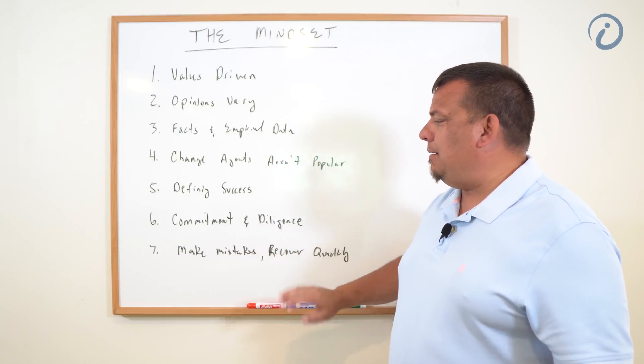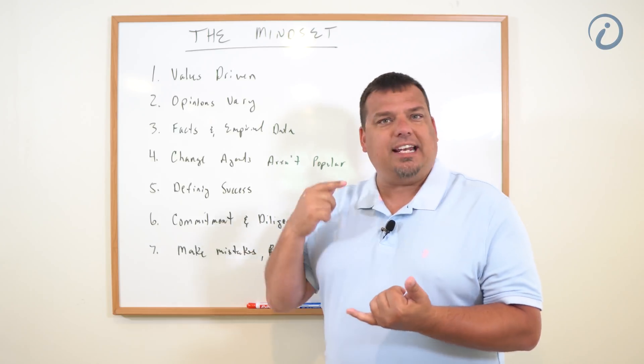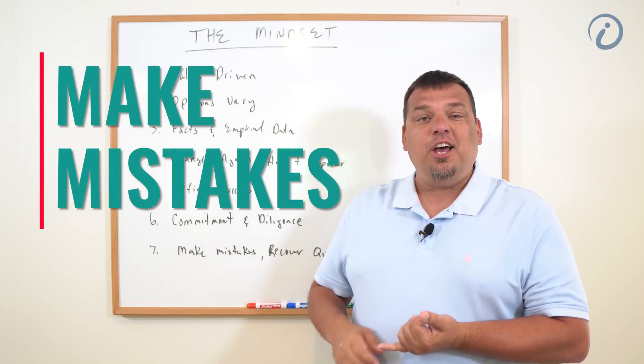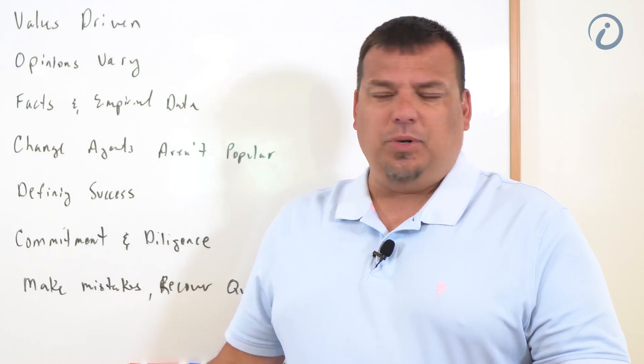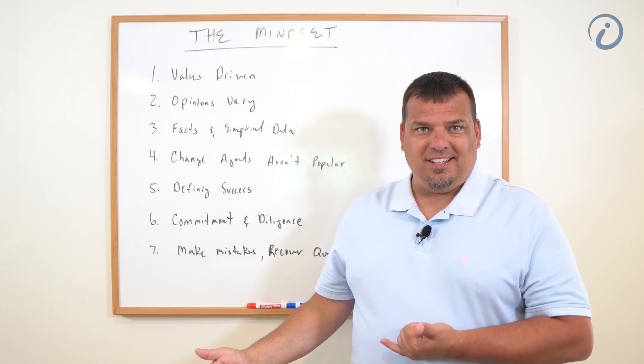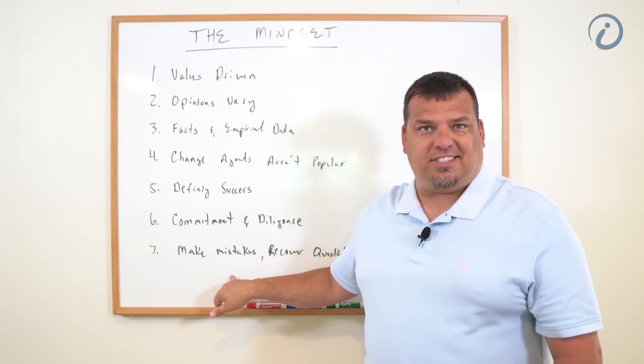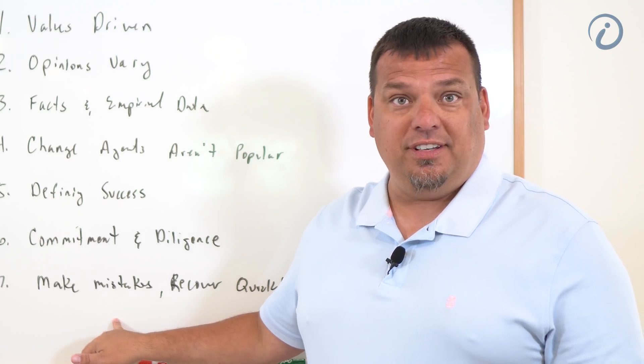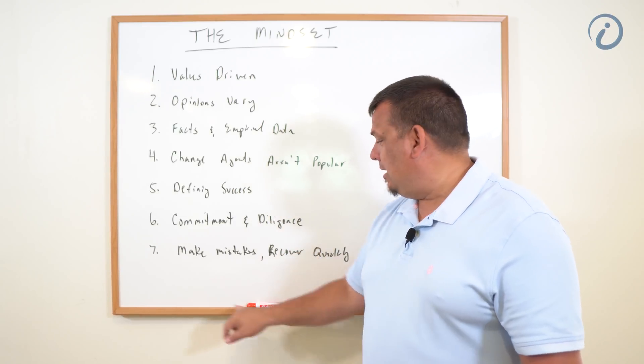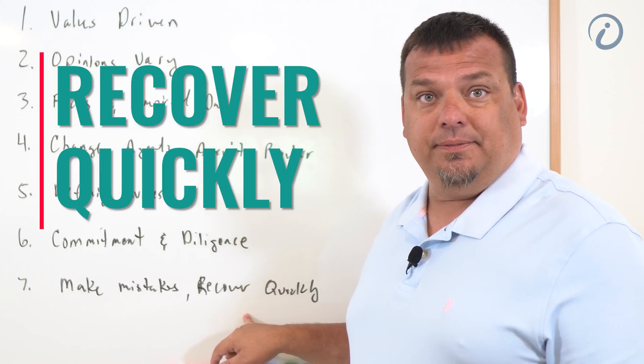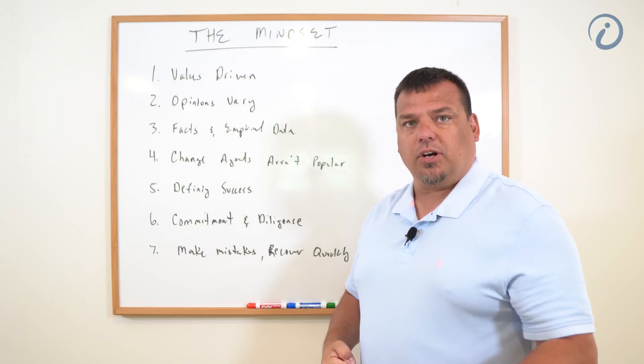And then this is the last one. I want to make two points here. Number one, you cannot be afraid to make mistakes. In fact, your goal should be to make mistakes. We learn from the mistakes we make. We do not learn from the successes. Make a shit ton of mistakes. Piss a lot of people off. Make mistakes, piss people off, get people angry, and then recover quickly. Learn from that mistake, learn from that interaction, and recover quickly.